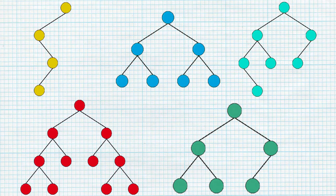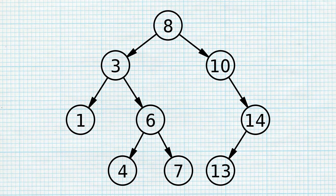There are many different types of trees in computer science. Everything currently on the screen is a type of tree despite the many variations. Binary search trees are distinguished by two important characteristics. For starters, they are a type of binary tree, which means that each node or vertex is limited to a maximum of two children.